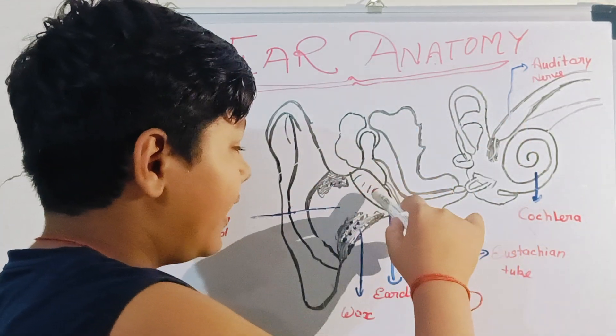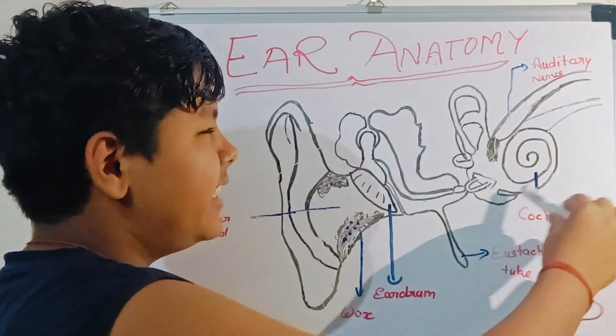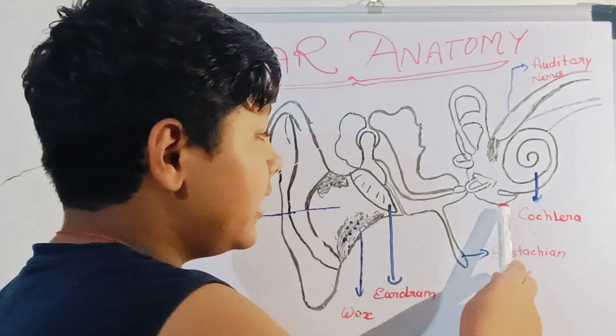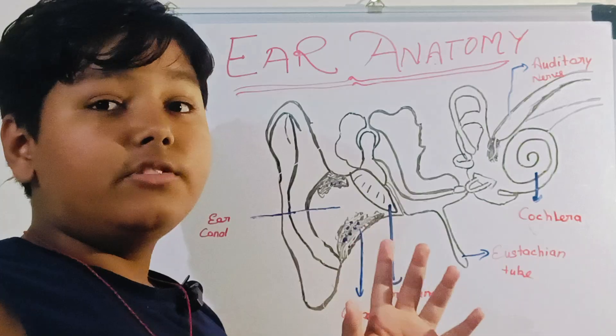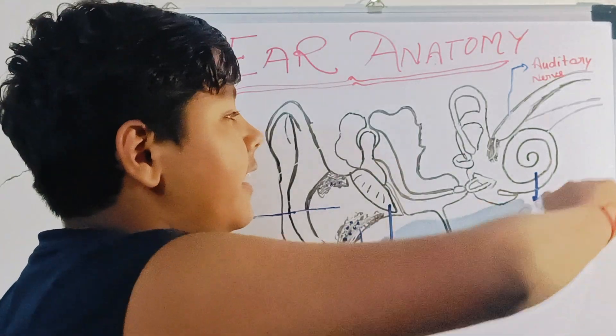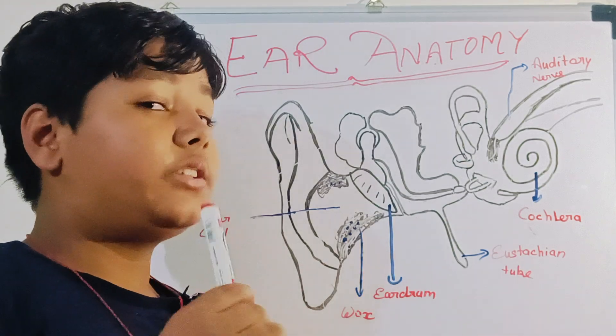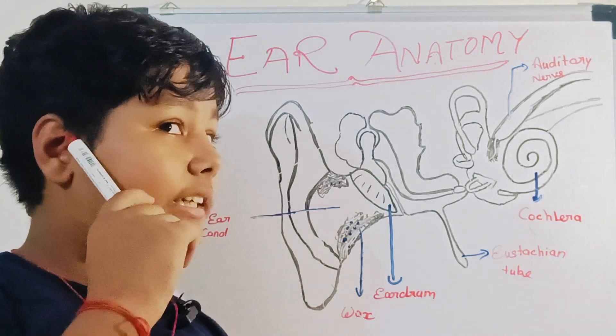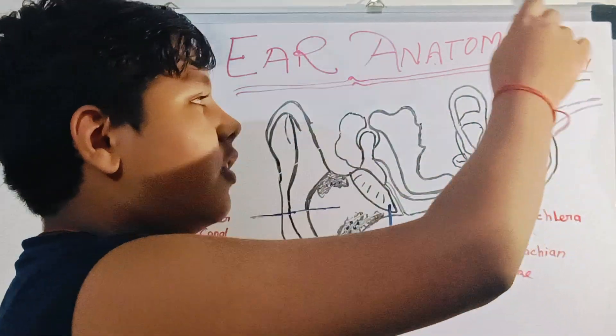After vibrating, the sound travels from here to this structure. This is the cochlea. In the cochlea, the sound is converted into electric waves. And we know that nerves are needed to transfer the electric waves from the ear to our mastermind, the brain. So which nerve is this? The auditory nerve.